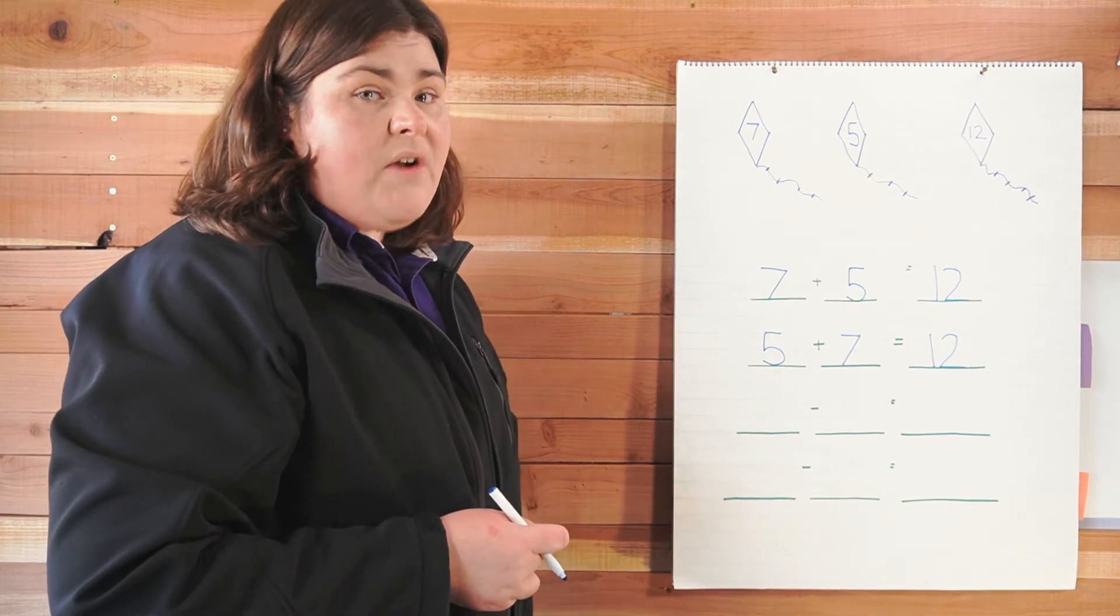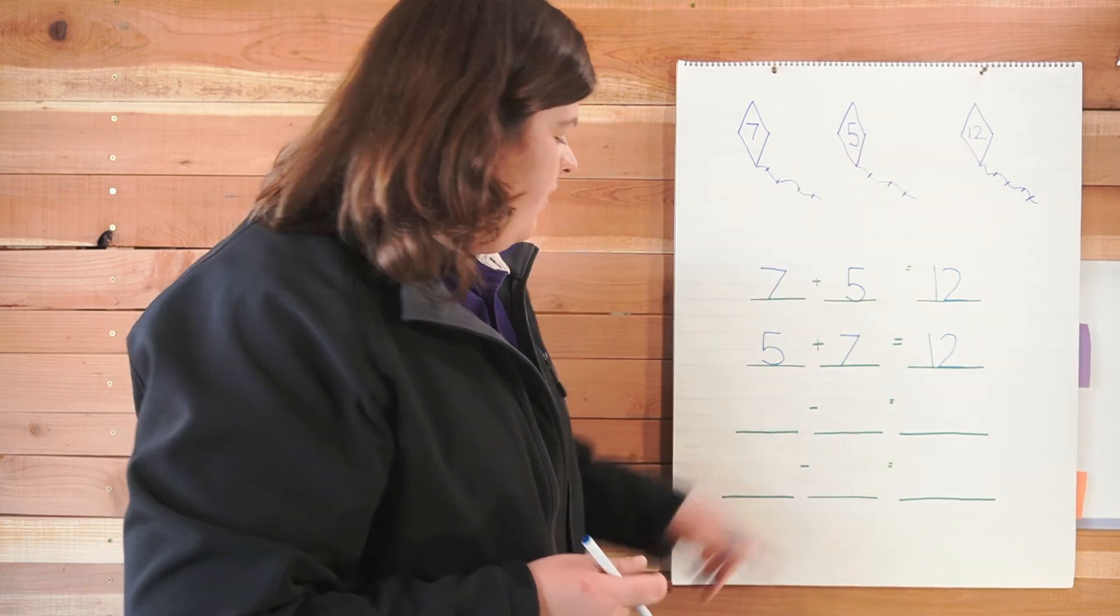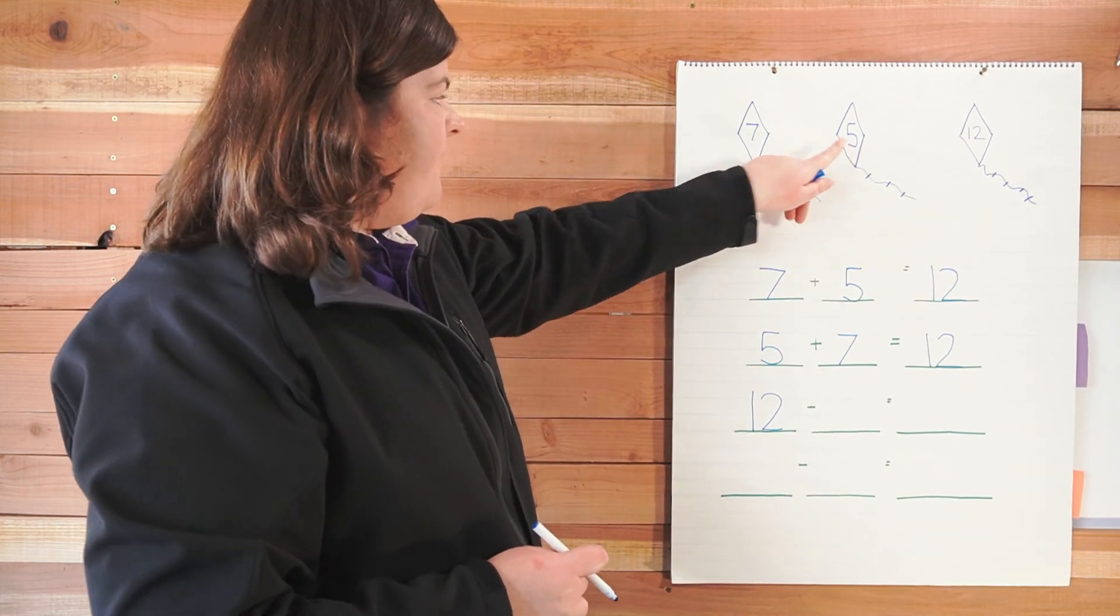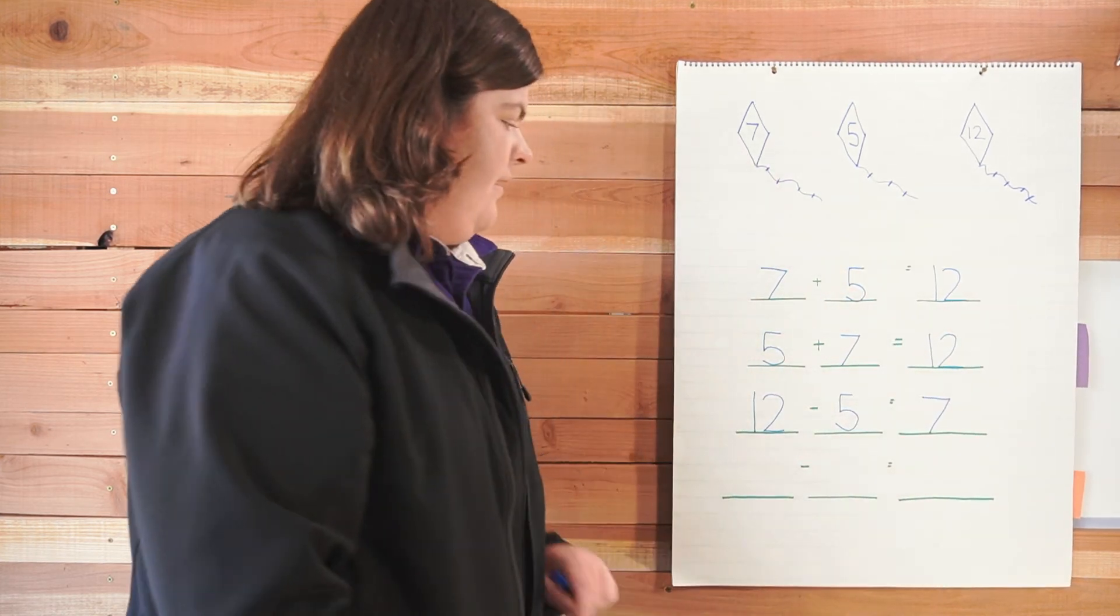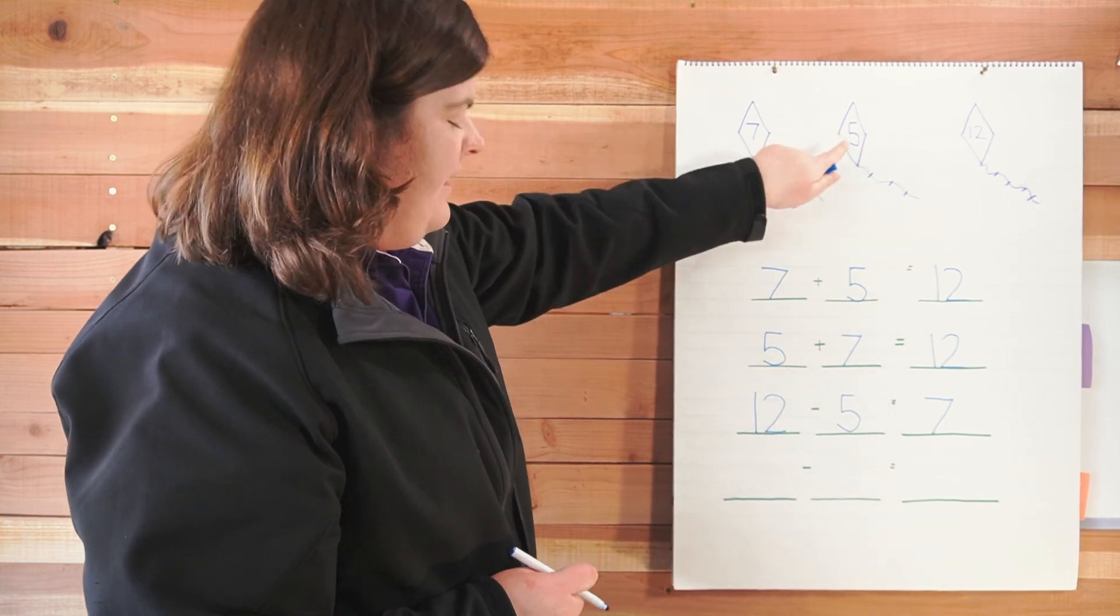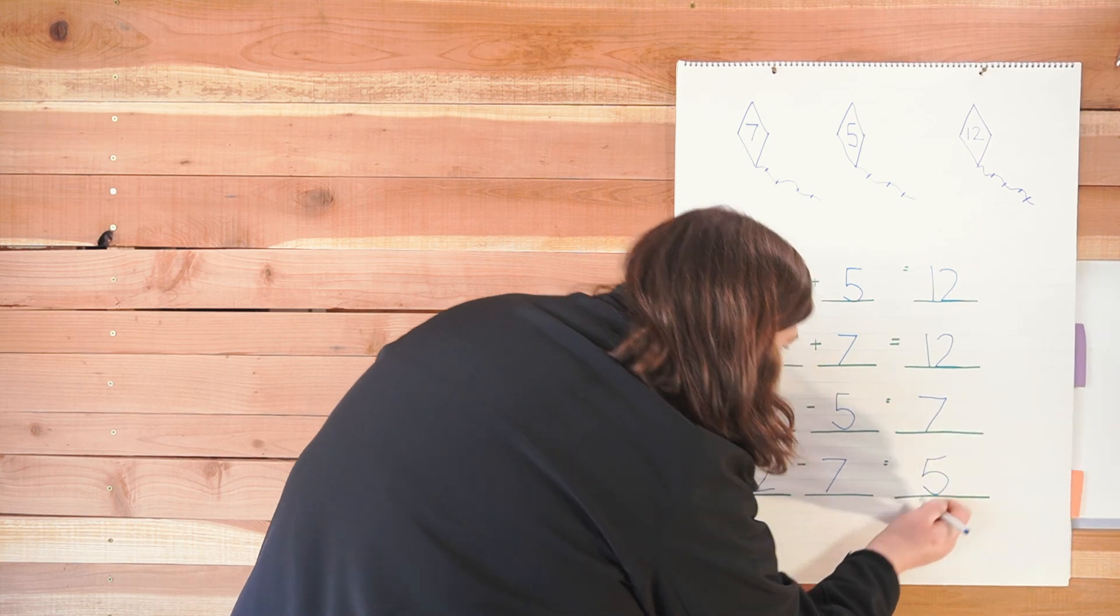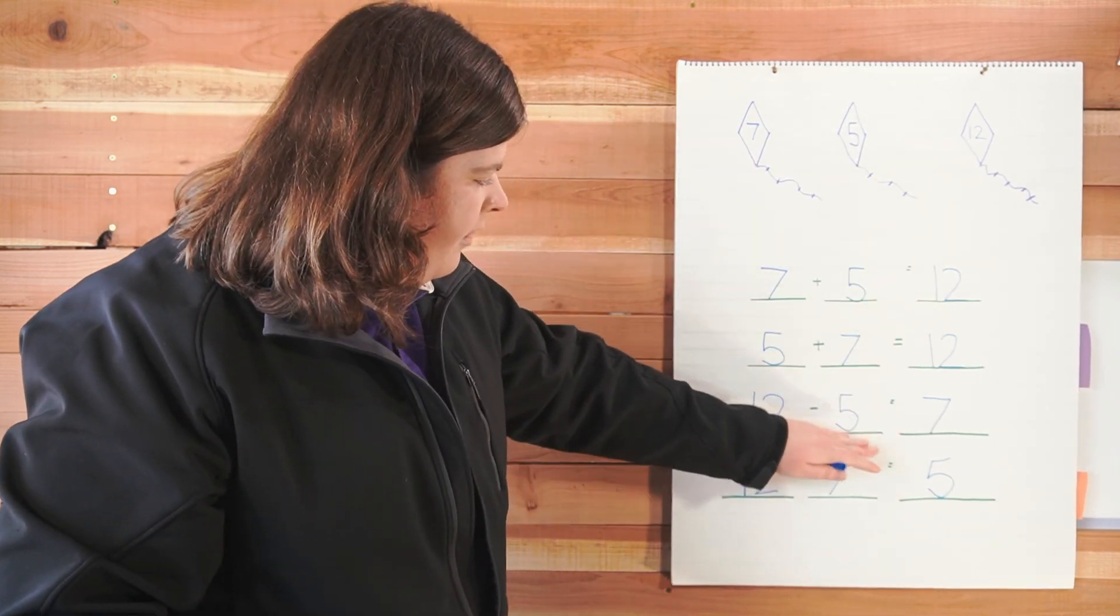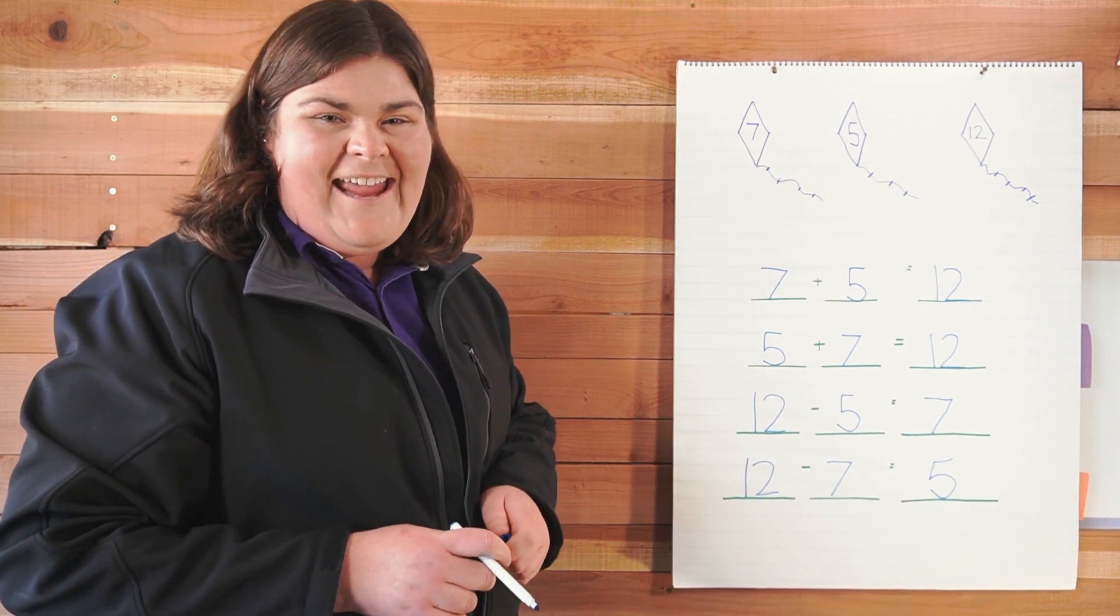Did we only use these three numbers? Yep, we did. Okay, for the subtraction problems, we always start with the biggest number. The biggest number is twelve, so we're going to put twelve here. Twelve minus five equals seven. What's the other subtraction problem? Twelve minus seven is five. This is our fact family for these three numbers. So these four problems use only these three numbers. Okay, boys and girls, I'll see you later. Bye!